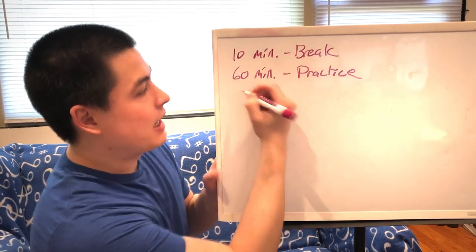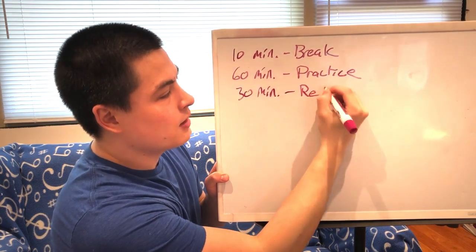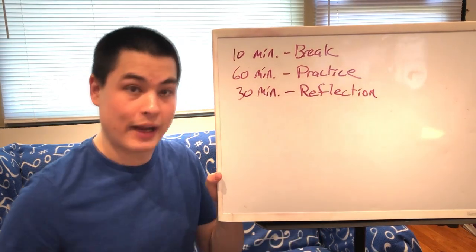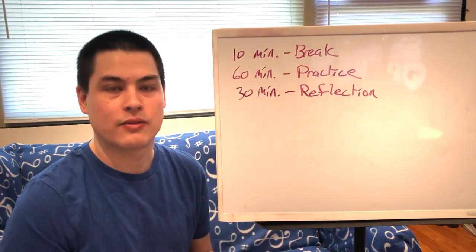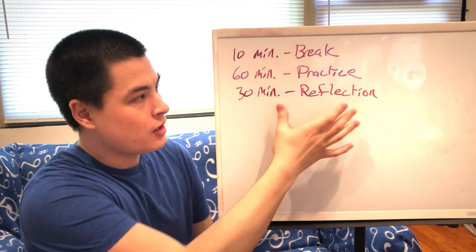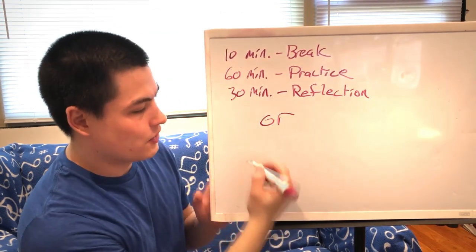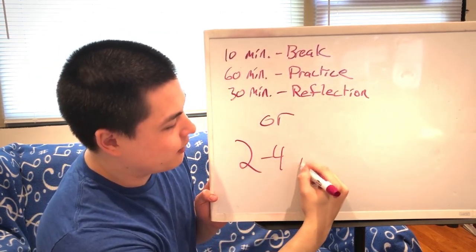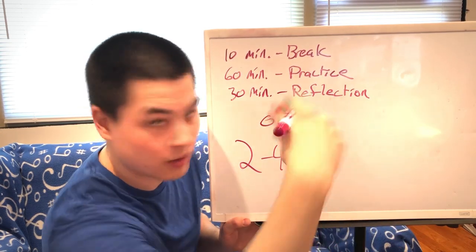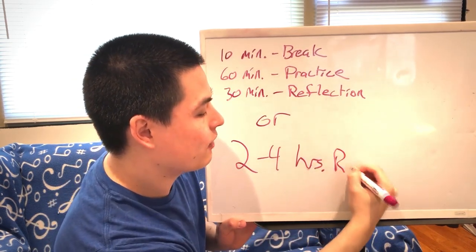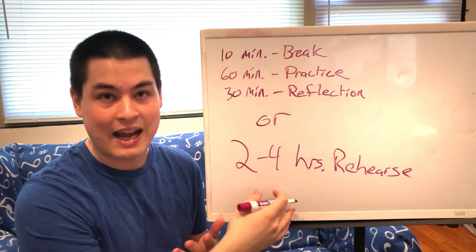And I would also include 30 minutes of review and reflection where you think about what went well for that day and start to plan what you want to do for the next day. So you do that whole four hours of practicing, five hours if you include the breaks. And then on days you don't have rehearsal, you include this extra 60 minute practice session. Or on days that you do have rehearsal, then you have two to four hours depending on what your rehearsal schedule looks like, how long your band or multiple ensembles that you may be in rehearse for.